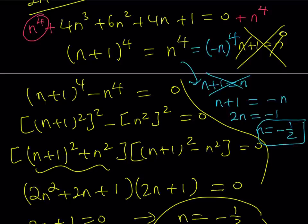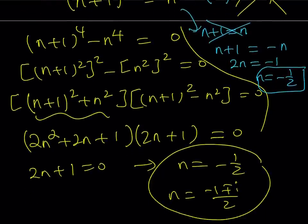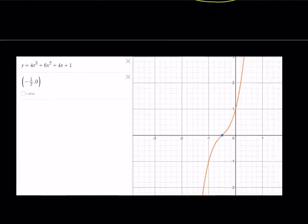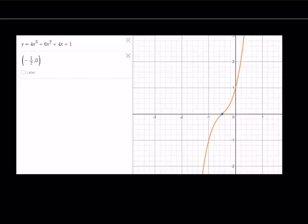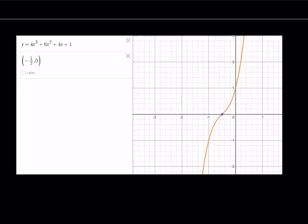In addition to all of these things, I'd like to show you a graph of this function. Here's a beautiful cubic with only one real solution, and as you can see, the single solution occurs at n = -1/2.